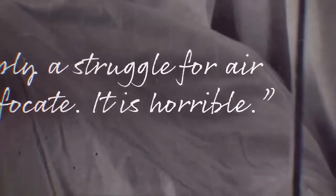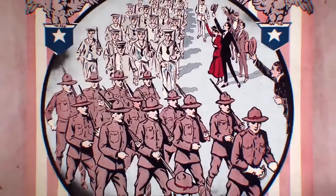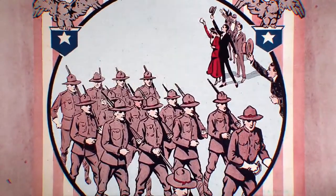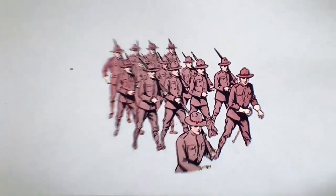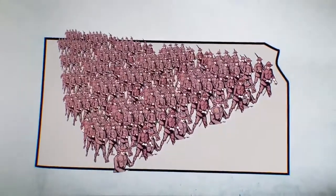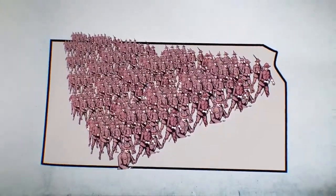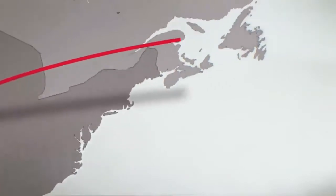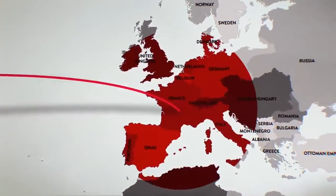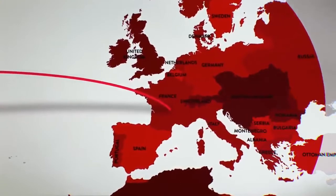The outbreak at Camp Funston affected more than 1,000 soldiers, and around 40 died. But those 1,000 were part of 1 million soldiers throughout the United States who were all in contact with one another. Those soldiers were then sent overseas in the spring of 1918, carrying flu microbes that would spread faster than the war itself.